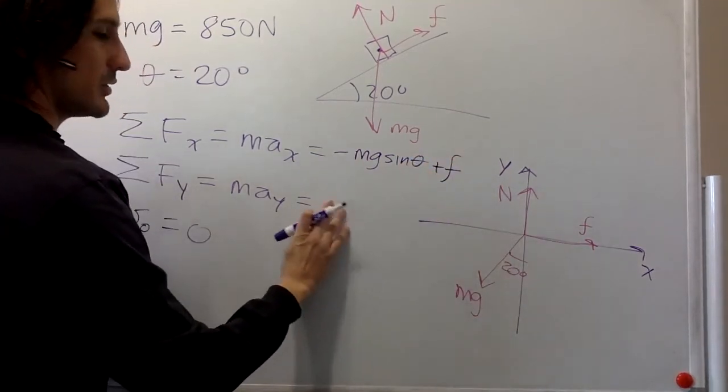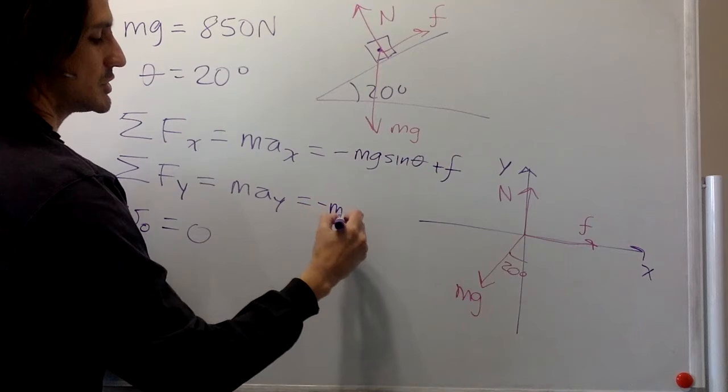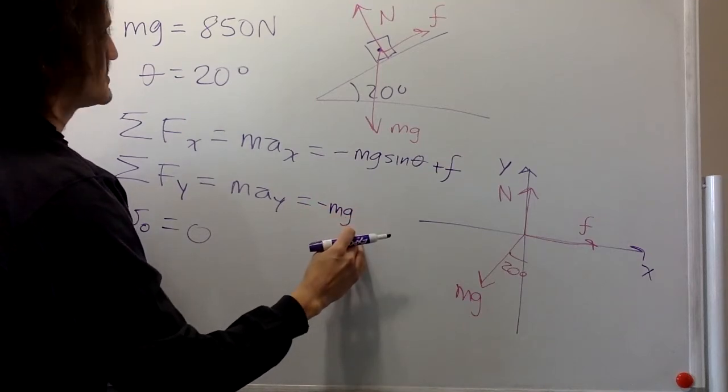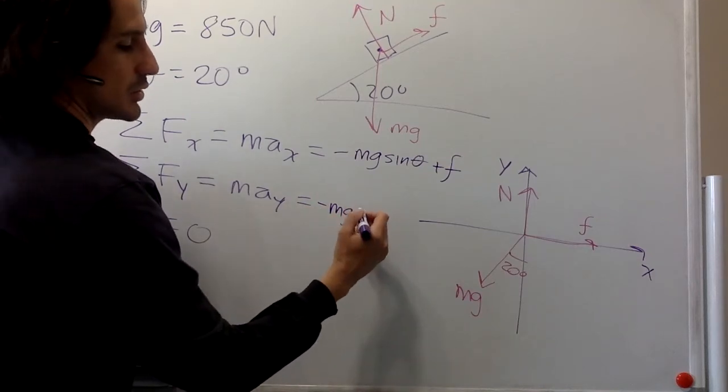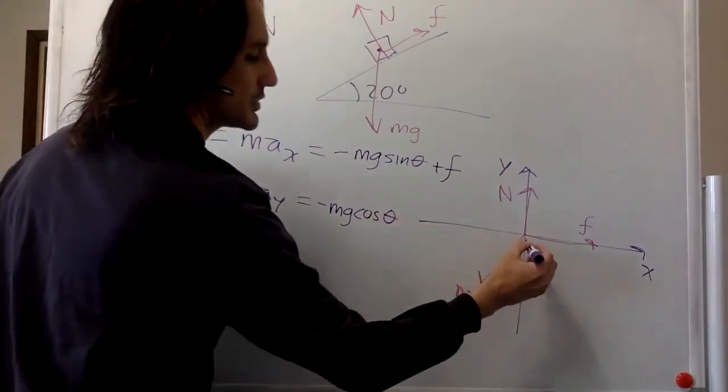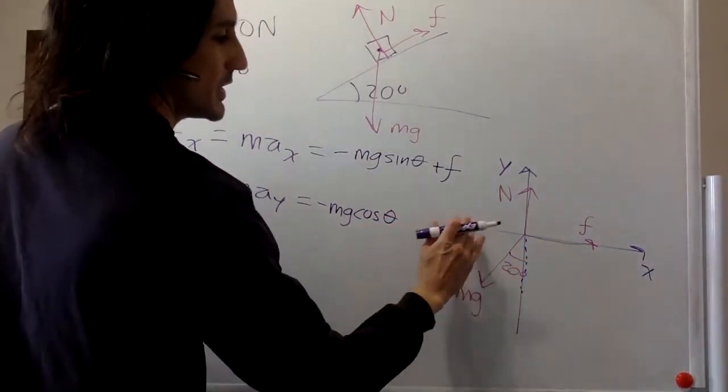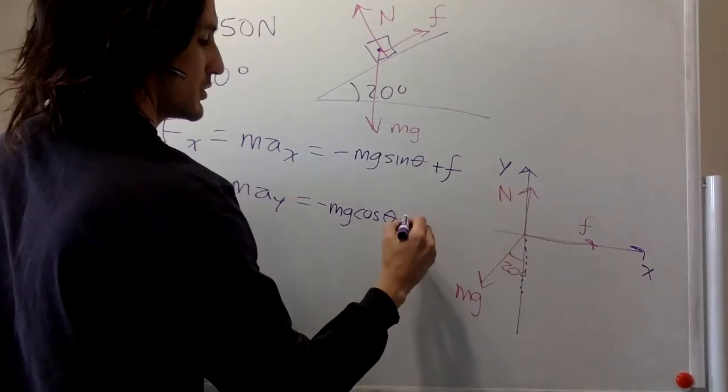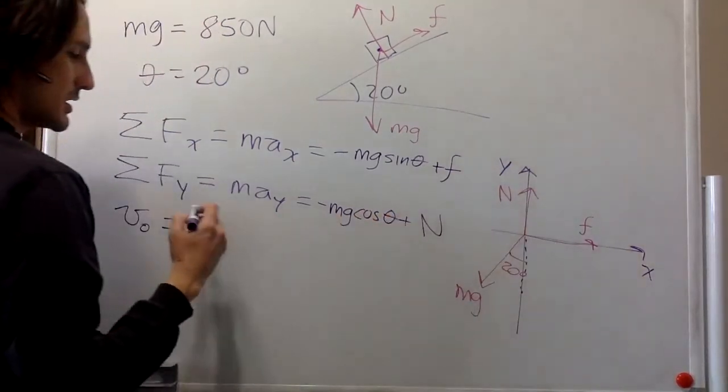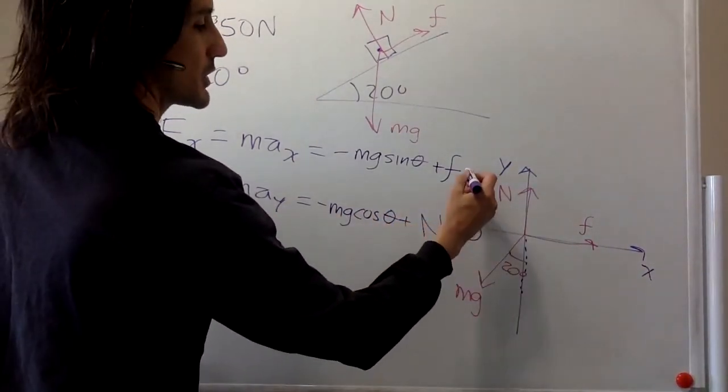And then in y, we have negative mg cosine theta, and then plus the normal. And of course, that's equal to zero because it is not moving.